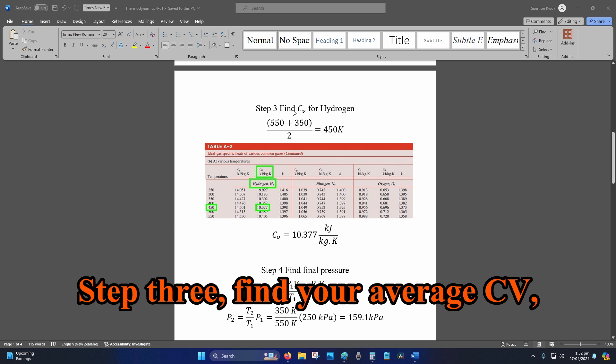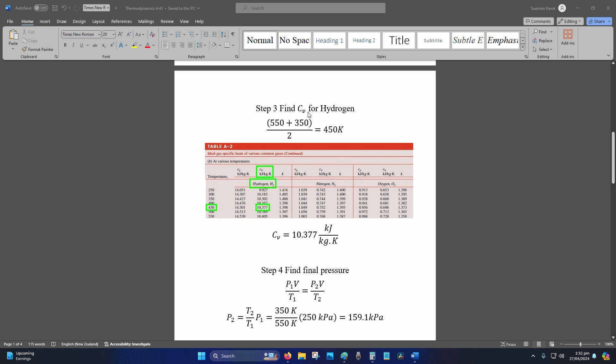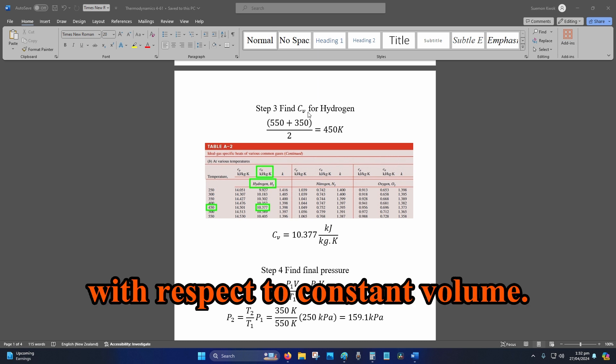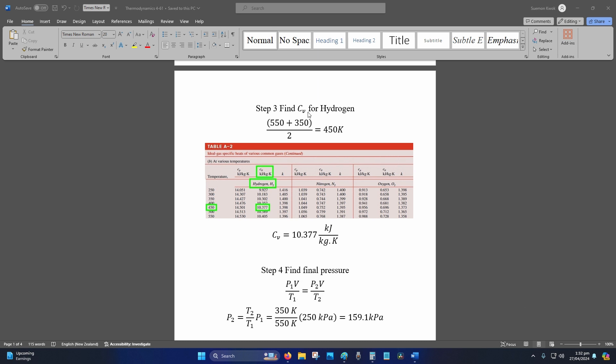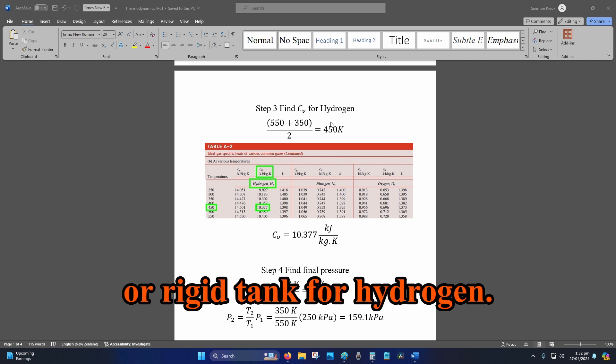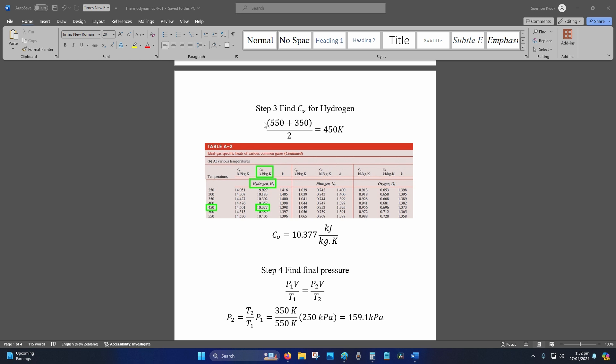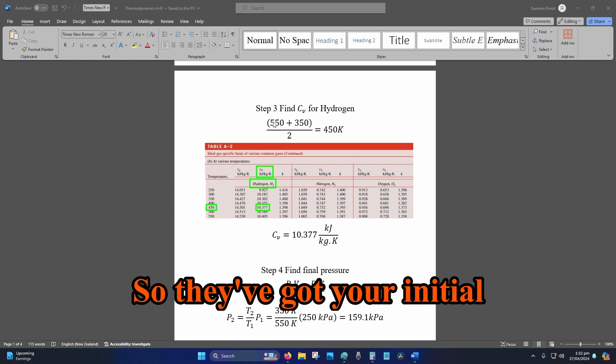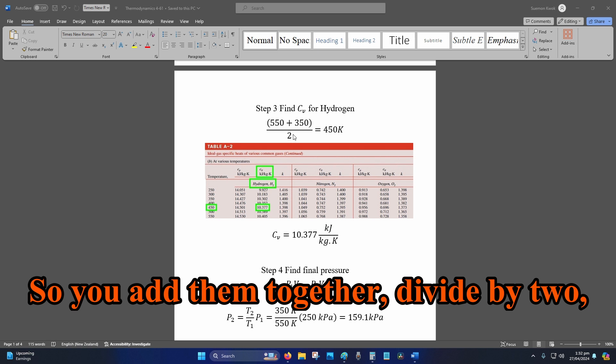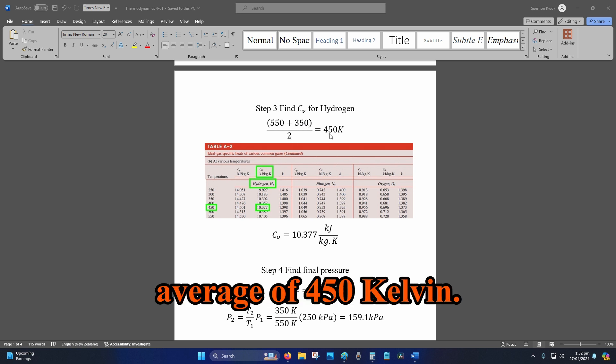Step 3, find your average CV, your specific heat capacity with respect to constant volume. It is constant volume because it's a rigid vessel or rigid tank for hydrogen. You've got your initial and your final temperature, so you add them together, divide by 2, that gives you your average of 450 Kelvin.